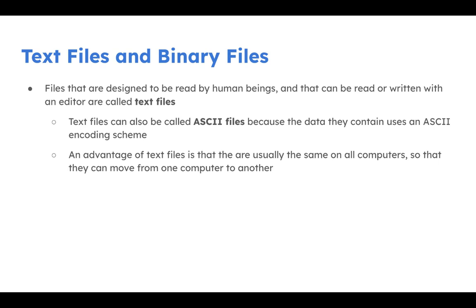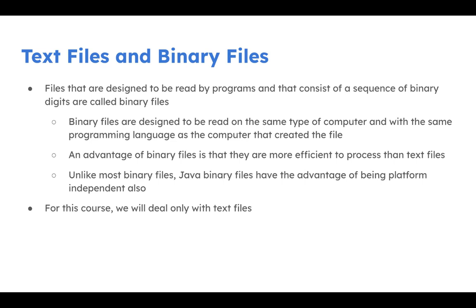Text files are one of the common ways we use generic files and they can be transported from one computer to another. Binary files are used by a specific type of application or program that reads or writes data specific to that application. Binary file reading and writing are more efficient than working with text files, however they are not application-independent. Java works around that limitation by making Java binary files platform-independent, so files written on any platform are the same when using the JVM.